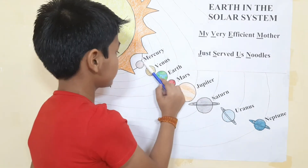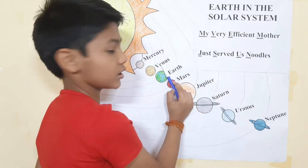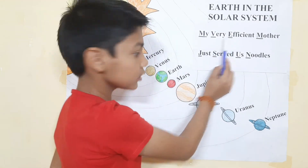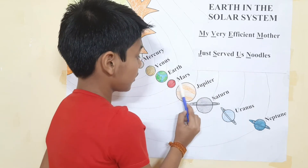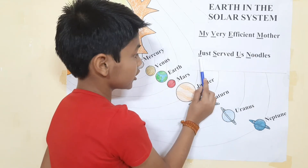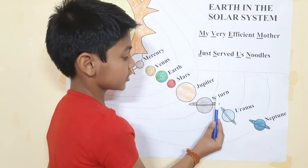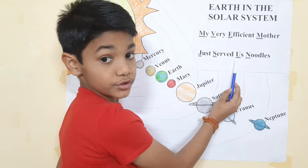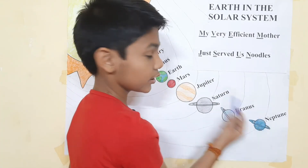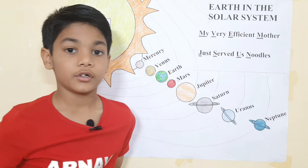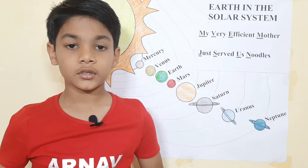Now let's have a look: M stands for Mercury, V stands for Venus, E stands for Earth, M stands for Mars, J stands for Jupiter, S stands for Saturn, U stands for Uranus, and N stands for Neptune. Hope you all learned about Earth in the solar system. Thank you.